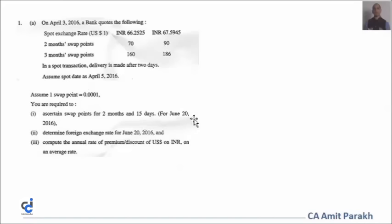In a spot transaction, delivery is made after two days. Given that we're talking about April 3rd, the spot date would be April 5th, 2016. Assume one swap point equals 0.0001. We are required to: ascertain swap points for two months and 15 days (June 20, 2016), determine the foreign exchange rate for June 20, 2016, and compute the annual rate of premium or discount of US dollar on INR on an average rate.